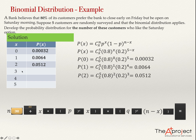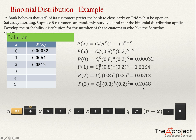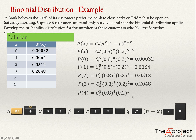For X equals 3, substitute into the formula: P(3) = C(5,3) × 0.8^3 × 0.2^2. The calculator gives 0.2048. For X equals 4, P(4) = C(5,4) × 0.8^4 × 0.2^1, and the answer is 0.4096 — the probability that 4 customers prefer the Saturday option.